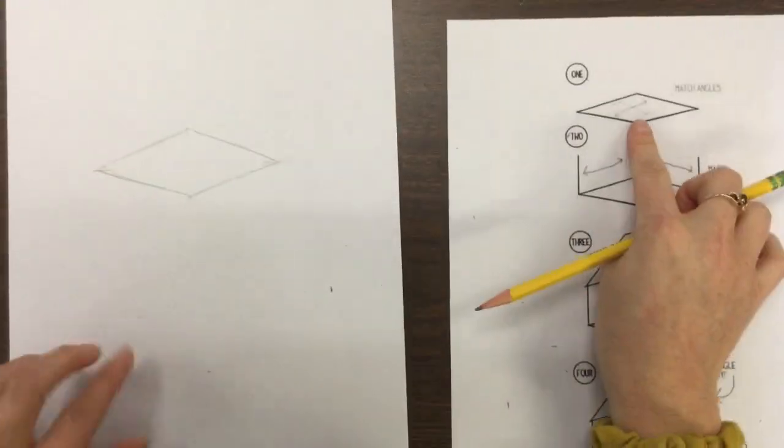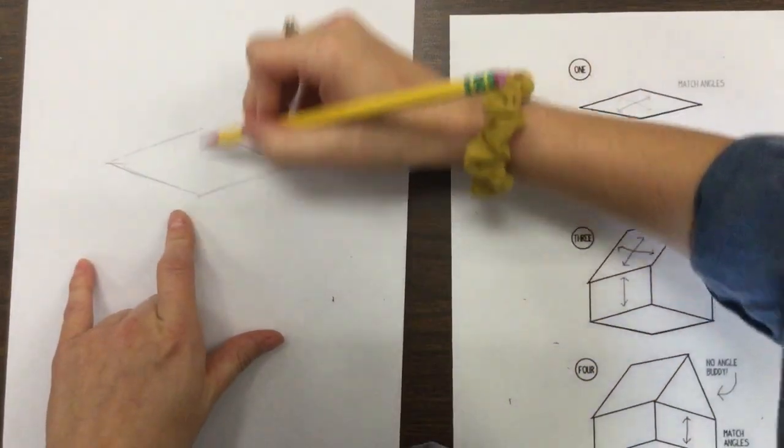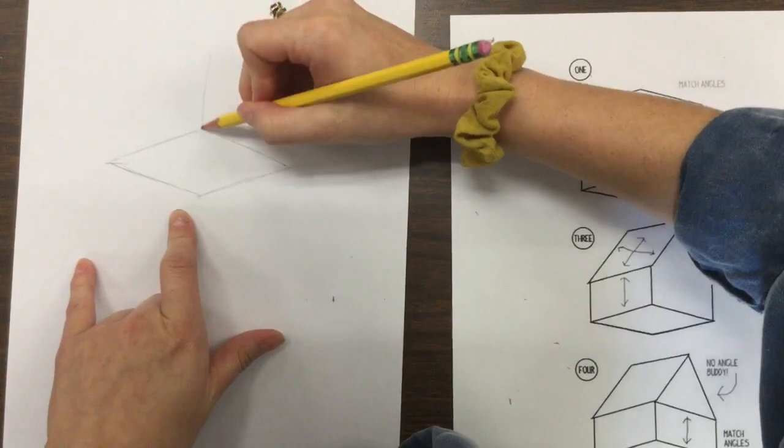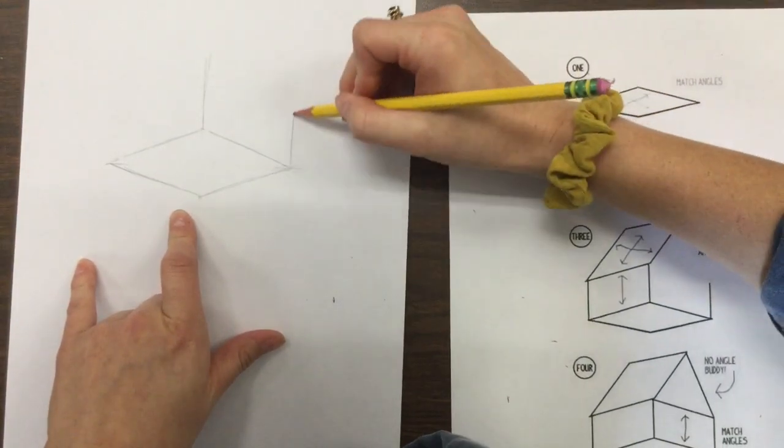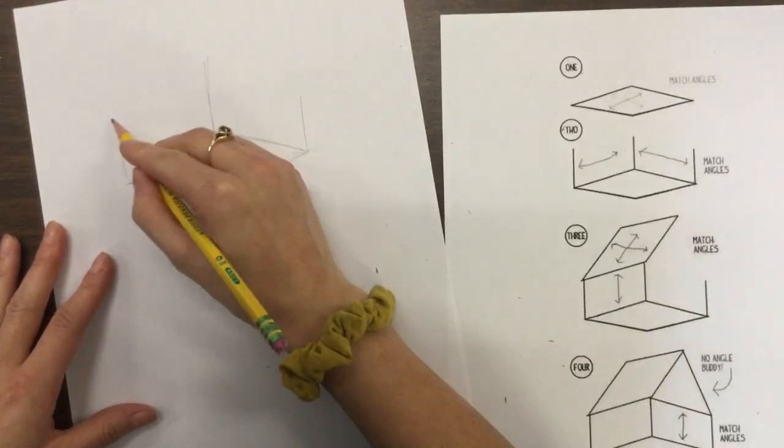So I have the bottom of my treehouse. And now I'm going to create the start to add the sides. So going straight up. And then on the sides as well. Then connecting those angles. Remember they have to match.